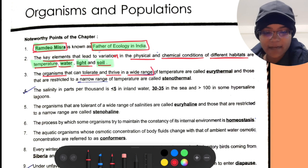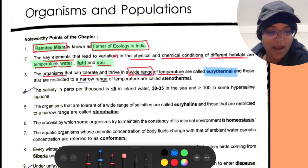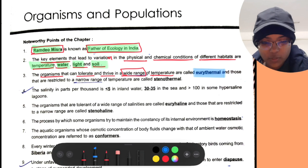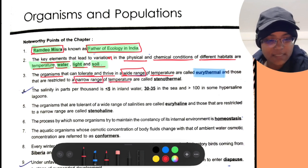The organisms that can tolerate and thrive in wider range of temperature are called eurythermal, and those with narrow tolerance are called stenothermal.